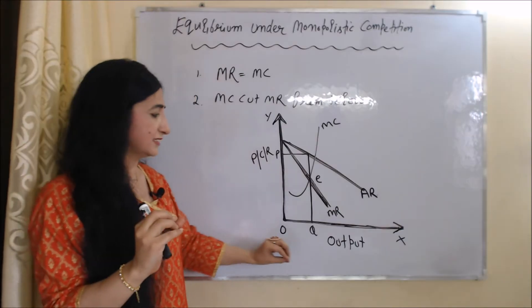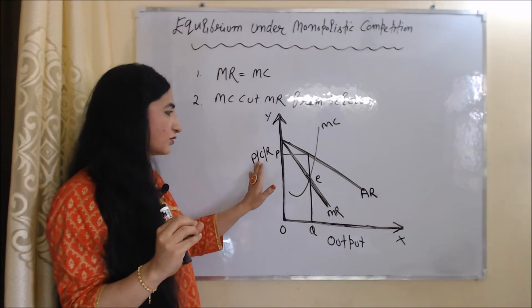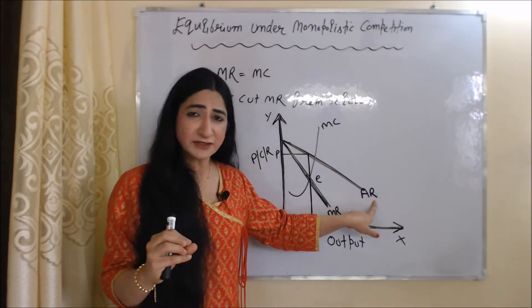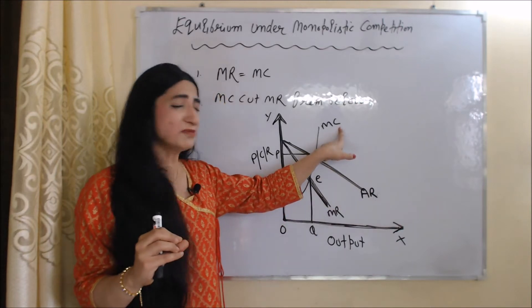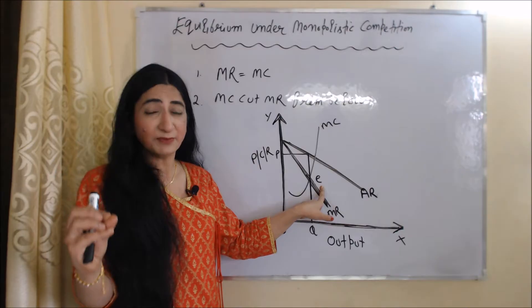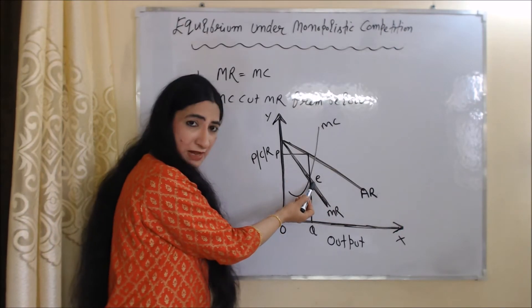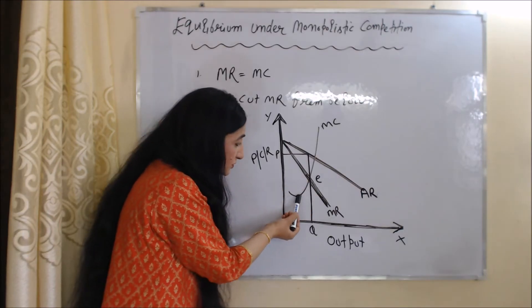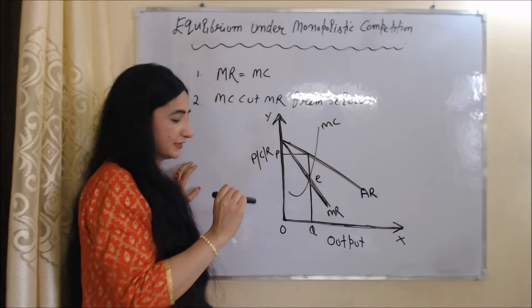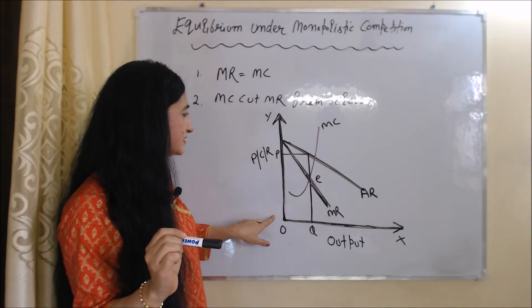In this diagram, the X axis shows output and the Y axis shows price, cost, and revenue. MR is the marginal revenue curve, AR is the average revenue curve, and MC is the marginal cost curve. E is our equilibrium point. At this E point, both conditions are fulfilled: MC is equal to MR, and the marginal cost curve cuts the marginal revenue curve from below. Our equilibrium output is OQ and equilibrium price is OP.